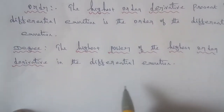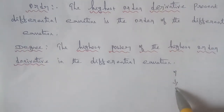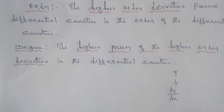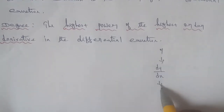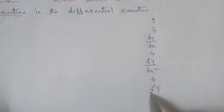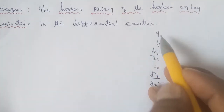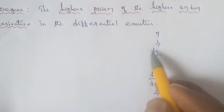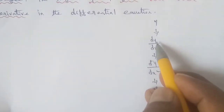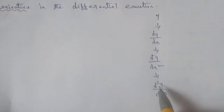For example, if y is the term, differentiating with respect to x gives dy/dx — that is the first order derivative. Differentiating dy/dx again gives d²y/dx² — the second order derivative. Differentiating once more gives d³y/dx³ — the third order derivative.